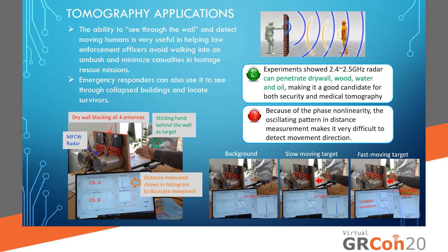Additionally, there are several types of motion that it can detect. For background noise, it shows a single distance measurement. For a slow-moving target, you can see the histogram slowly moving toward or away from the target. For a fast-moving target, there is a more unstable waveform and a more fluctuating value. It can detect all these types of motion, with the histogram providing a good illustration.